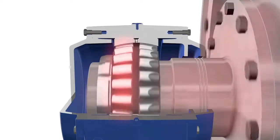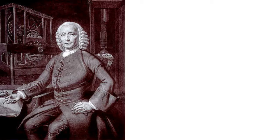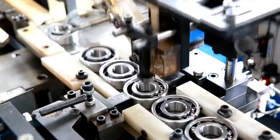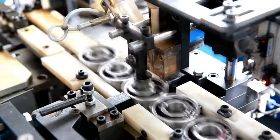The first practical caged roller bearing was invented in the mid 1740s by horologist John Harrison for his marine timekeeper. This uses the bearing for a very limited oscillating motion, but Harrison also used a similar bearing in a truly rotary application in a contemporaneous regulator clock. Today, ball and roller bearings are used in many applications which include a rotating component.